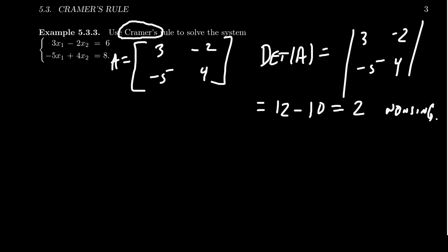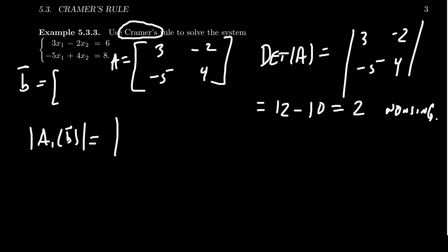Next, we compute the determinant of A₁(b). This means you take the first column of A and replace it with b. Here b is the vector [6, 8], taken from the right-hand sides of the equations. So you put 6 and 8 into the first column, and the second column of A remains identical: -2 and 4.